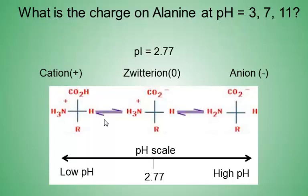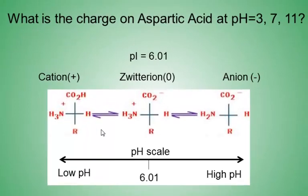Alanine is an anion at all three of these pH values — at pH 3, 7, and 11 — since all are above its pI of 2.77. Next, aspartic acid. The pI for aspartic acid is 6.01. At pH 3, aspartic acid is a cation. At pH 7 and 11, it is an anion.